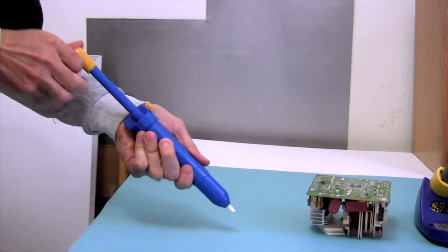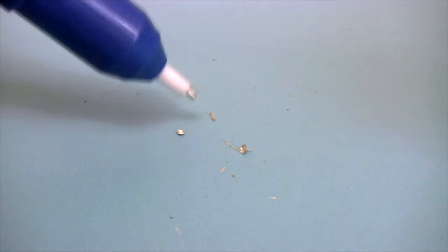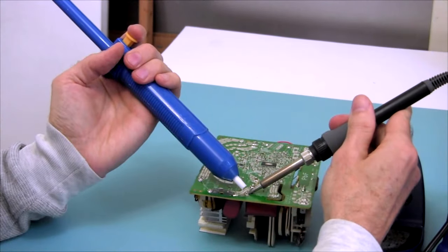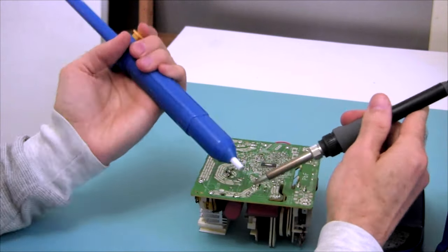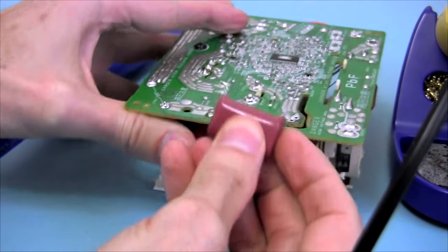To remove the solder from the pump, simply push the piston back in. Repeat the process for the other capacitor connection too. When it looks like all the connection points are clean, remove the part.